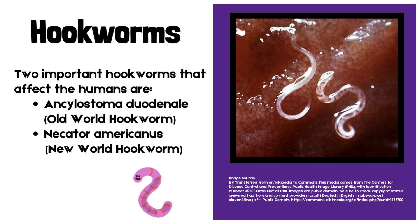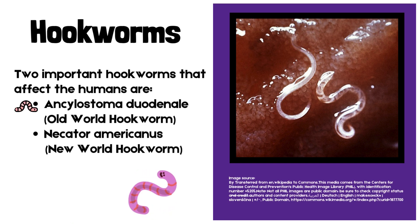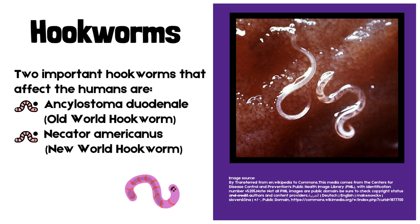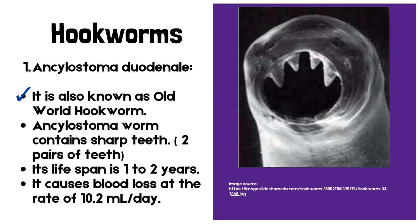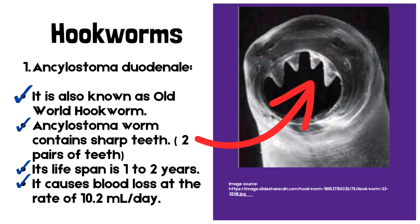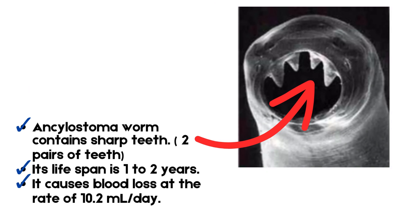Two important hookworms that affect humans are Ancylostoma duodenale, the Old World Hookworm, and Necator americanus, the New World Hookworm. Ancylostoma duodenale contains two pairs of sharp teeth, has a lifespan of 1 to 2 years, and causes blood loss at the rate of 10.2 milliliters per day.